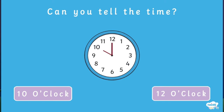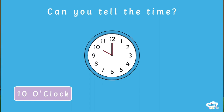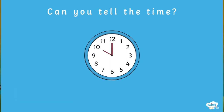It's not half past twelve. Hint: look at where the minute hand is pointing. It's ten o'clock! The big hand is pointing at twelve, so we say o'clock, and put it after the number that the small hand is pointing to, which is ten. That means it's ten o'clock.